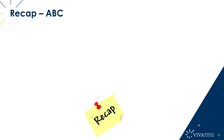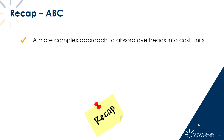So let's recap on activity-based costing. What we know now is it is a more complex approach to absorbing overheads into cost units. So if we're a manufacturing business trying to work out the cost of making our products, activity-based costing is a much more in-depth approach compared to absorption costing, which breaks the production side of the business down into just a couple of departments. With ABC, we break it down into activities — much smaller scale — and identify cost drivers. It's a much more complex approach, but that complexity and deeper dive on our overheads should bring us much more accurate information.